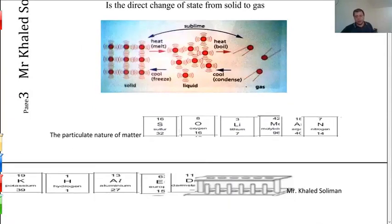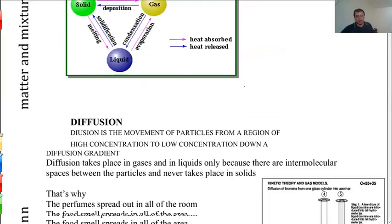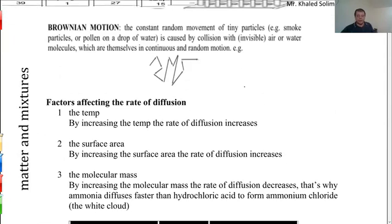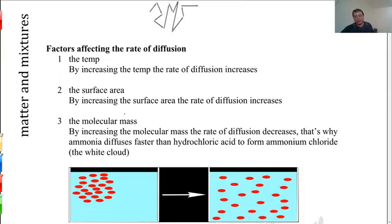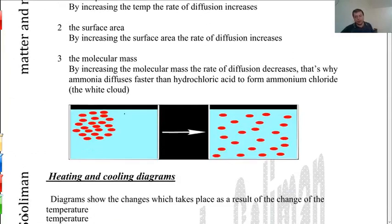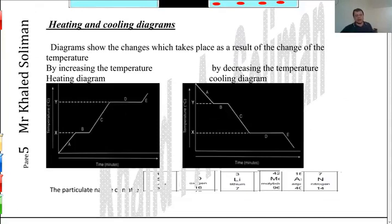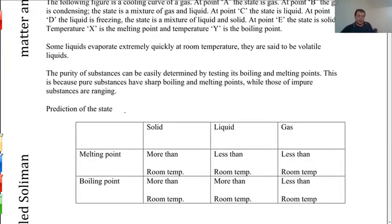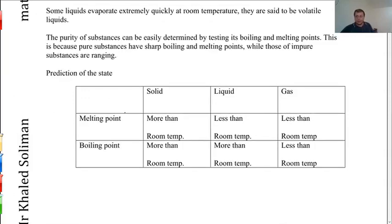We talked about the energy change required for state changes — which ones are endothermic — and we talked in detail about diffusion, factors affecting diffusion, and the difference between Brownian motion and random motion. We also concentrated on molecular mass, which affects diffusion. The rate of diffusion is inversely proportional to the molecular mass. We also covered the heating diagram and cooling diagram, which show the relationship between temperature and time while heating a substance.